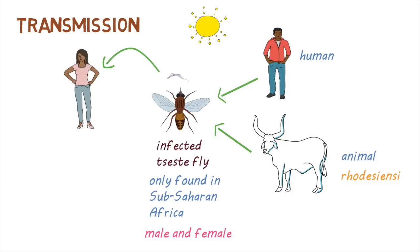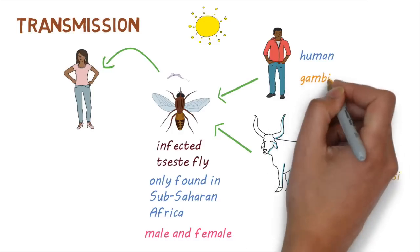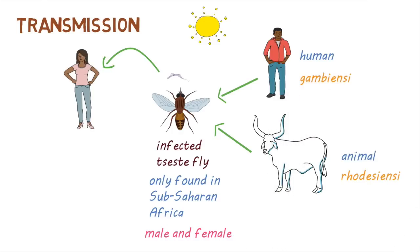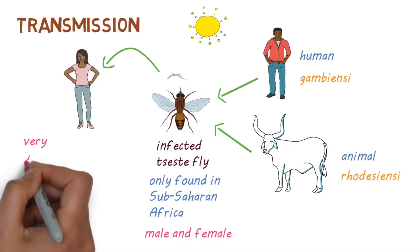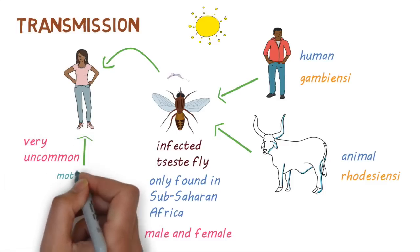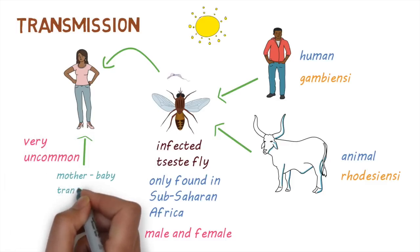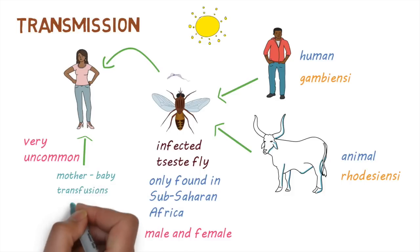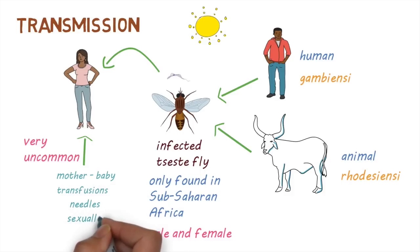Humans are the main reservoir for Gambiensi. Very uncommonly, the infection can be transmitted from mother to baby or through blood transfusions, infected needles and syringes, or sexually.